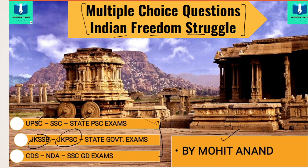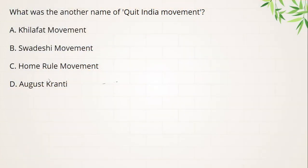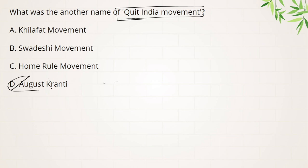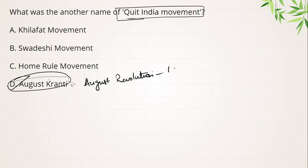Question number 1: What was the another name for Quit India Movement? Quit India Movement ka doosra naam kya tha? Your options are: first is Khilafat Movement, second is Swadheshi Movement, third is Home Rule Movement, and fourth is Agasth Kranty. The right answer is Agasth Kranty — basically August Revolution kaha jaata hai Quit India Movement ko, jo 1942 mein start hui thi.